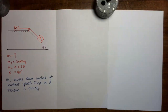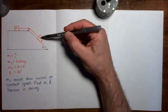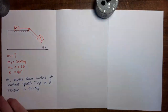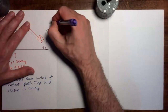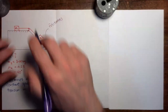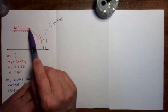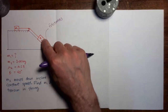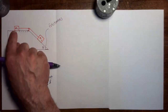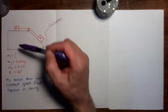In this video, we're going to do an example problem that involves two masses. We have mass 2 moving down a frictionless incline. Mass 2 is attached to a string that goes parallel to the incline, over a pulley, and connects to mass M1. As mass 2 moves down the incline, the string pulls mass 1 to the right along the horizontal surface. There is friction between mass 1 and the surface below.